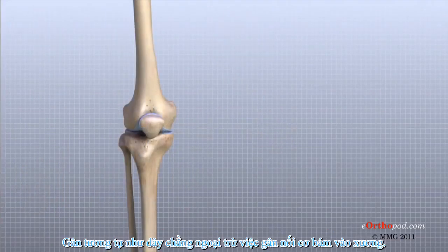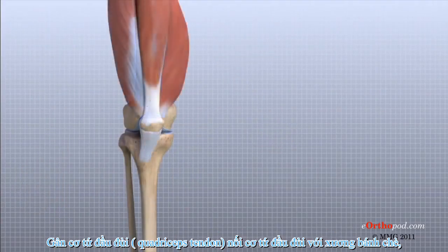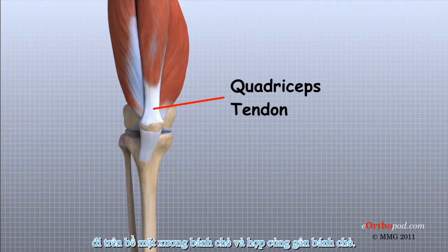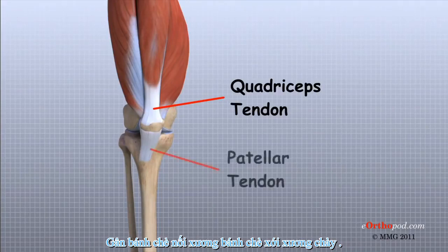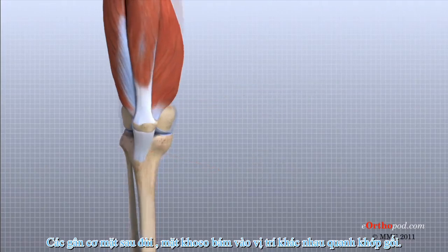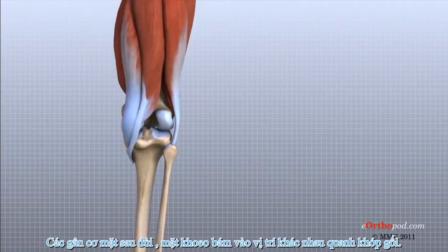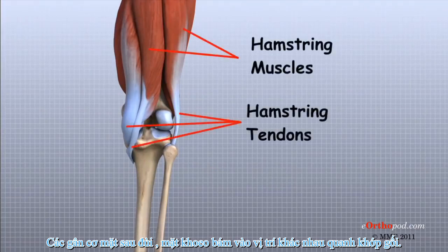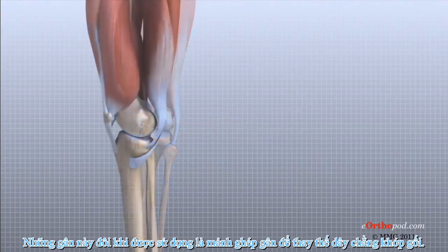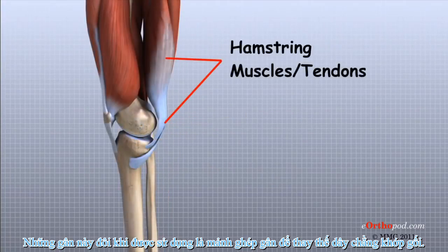Tendons are similar to ligaments, except that tendons attach muscles to bones. The quadriceps tendon connects the large quadriceps muscle of the thigh to the patella. This tendon continues across the patella, or kneecap, and blends into the patellar tendon. The patellar tendon connects the patella to the tibia. The hamstring muscles on the back of the thigh also have tendons that attach in different places around the knee joint. These tendons are sometimes used as tendon grafts to replace torn ligaments in the knee joint.